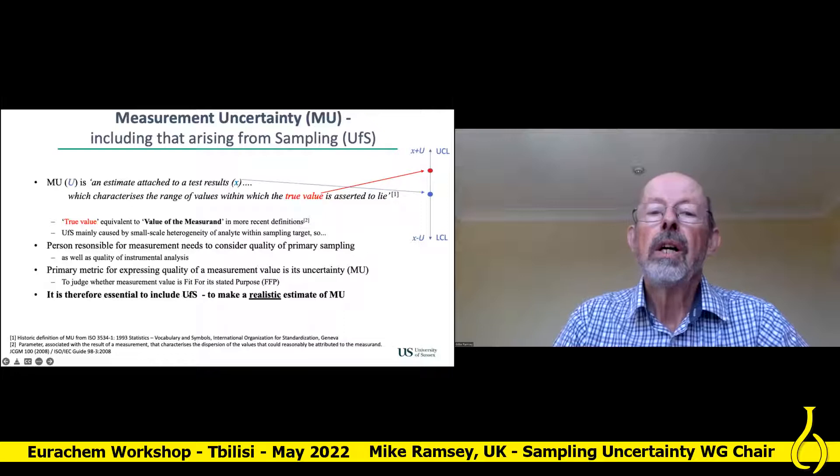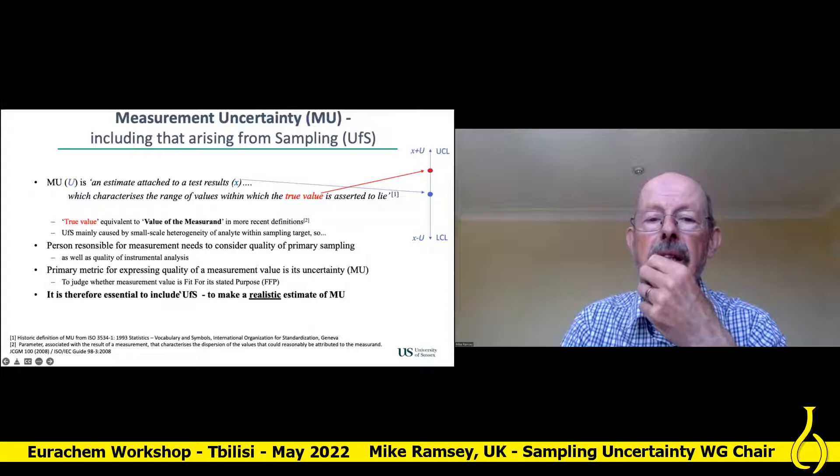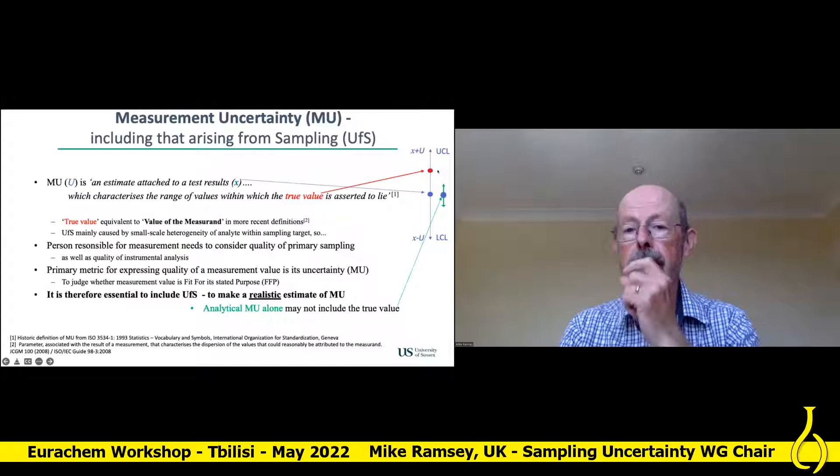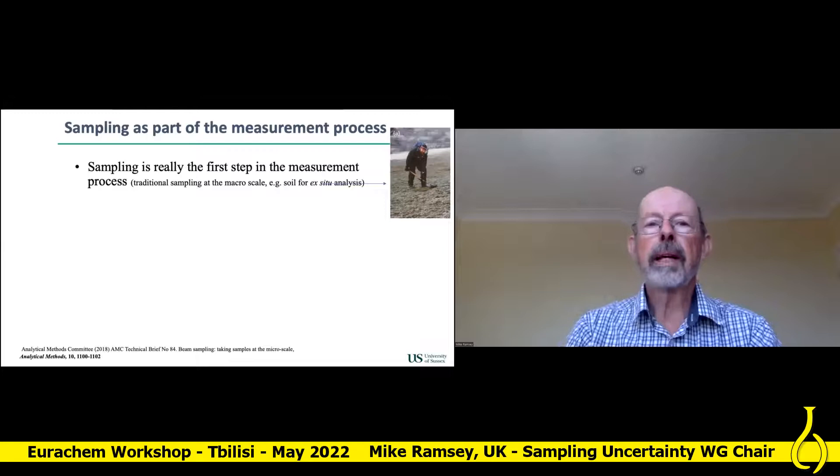The primary metric for expressing the quality of the whole measurement is the measurement uncertainty, and that's the way to judge the fitness for purpose of the whole measurement process. We have to make the estimate of measurement uncertainty realistic to include uncertainty from sampling. Otherwise, if we just use the analytical measurement uncertainty, we'd exclude the idea that the true value could be right up here.